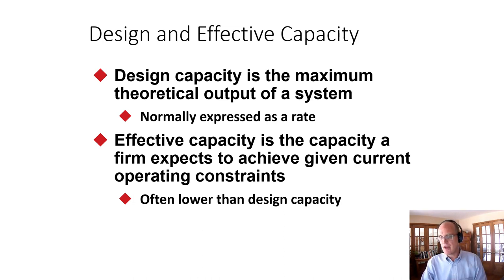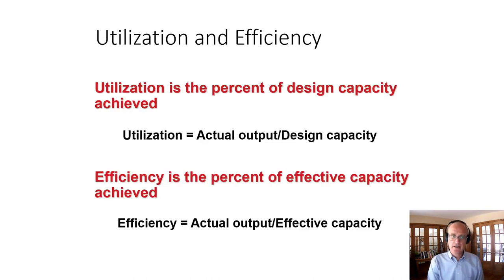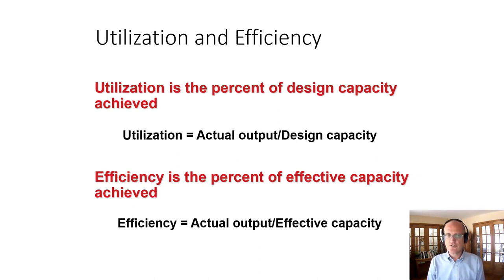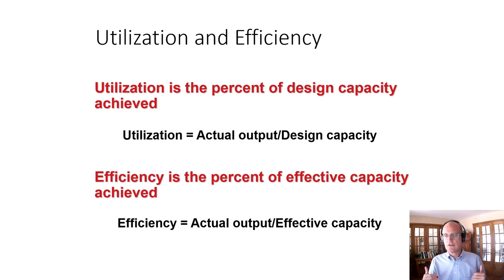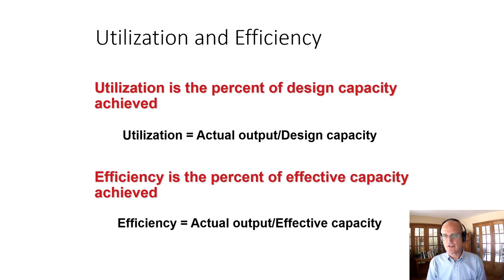Effective capacity can never be higher than design capacity, and it is often lower as we manage our operation. There can be things like shutdowns for maintenance that we need to consider. The first measure of capacity is utilization — the percent of design capacity achieved. It is actual output over design capacity, measuring the degree to which you are effectively taking advantage of the entire design capacity.